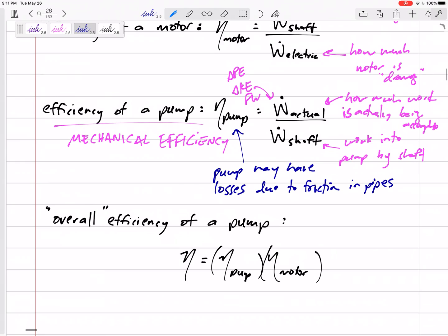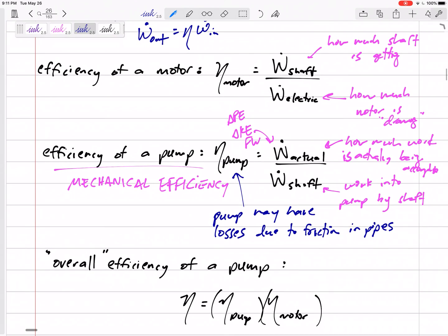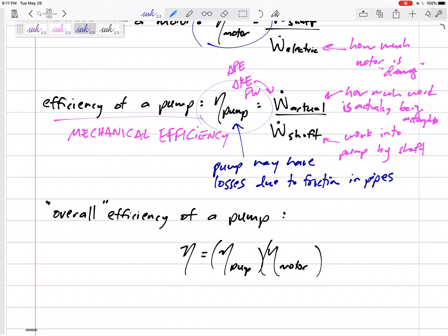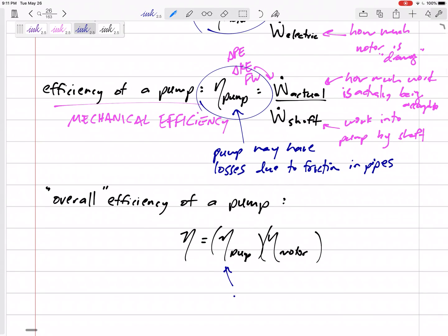The overall efficiency of a pump, if you have a motor that is driving a pump, would be the multiplication of both of those. For example, if you've got a pump that's 90% efficient, we've got 0.9, and a motor that's 90% efficient, then the overall total efficiency would be 81%. If both of those are 90%, we lose a little bit here, we lose a little bit there. Multiply the efficiencies together to get the overall efficiency of a pump.